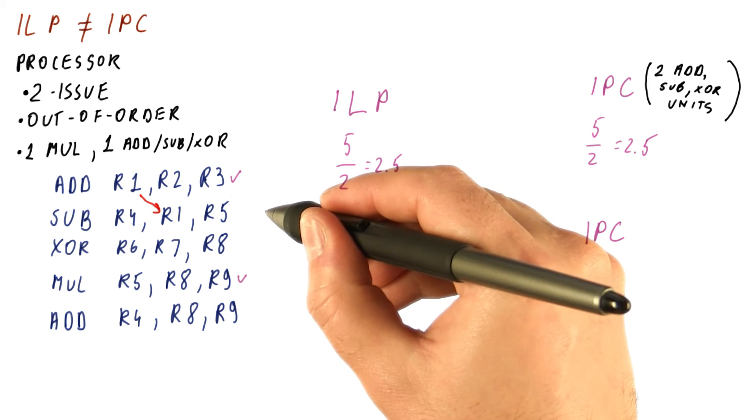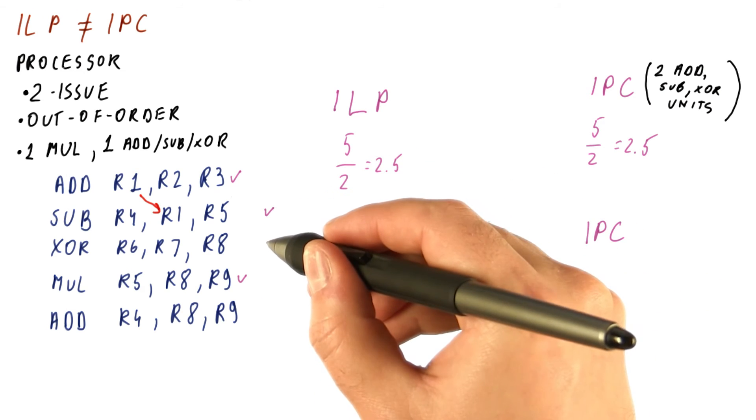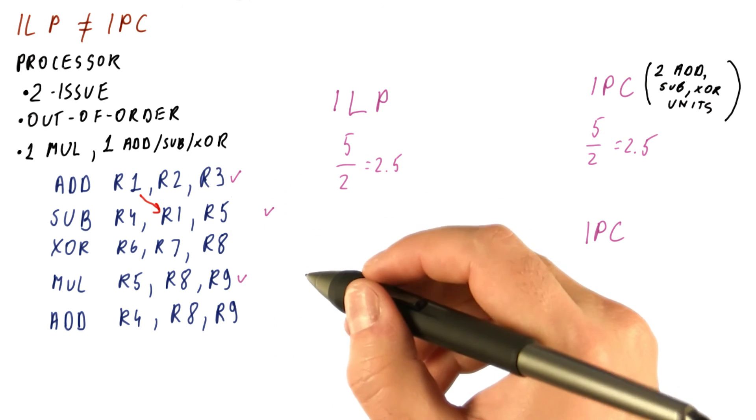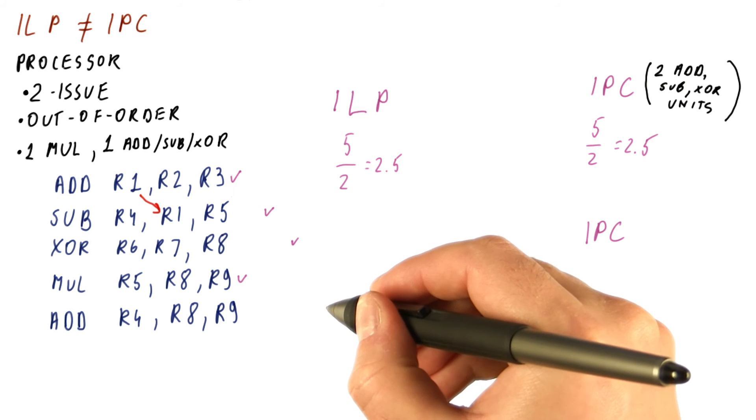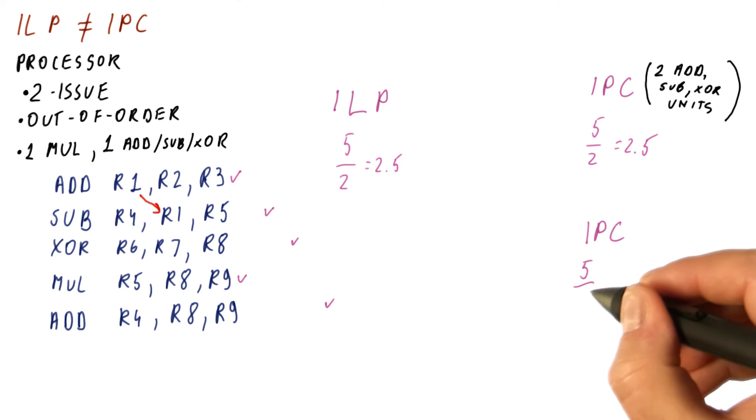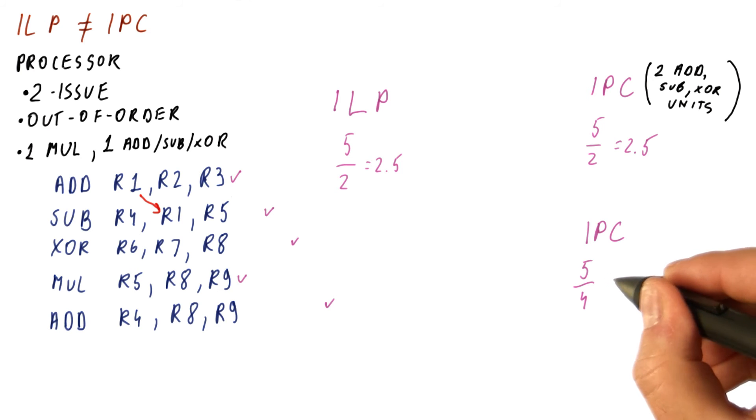In the second cycle, we can do this. We cannot do any of these other two because, again, we are using our add, subtract, XOR unit. This would be in our third cycle, and this would be our fourth cycle. So now we have five instructions over four cycles, and that's equal to 1.25.